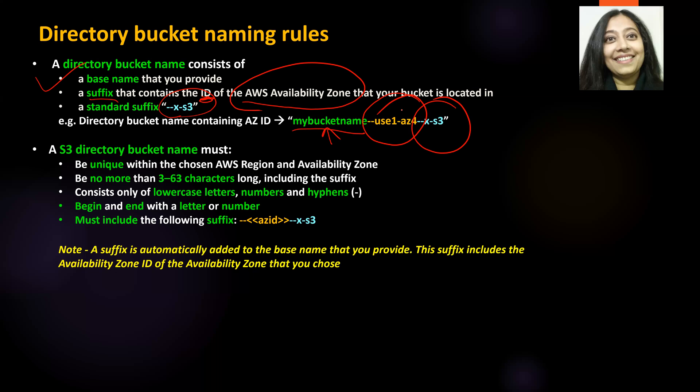The S3 bucket name must be unique, should be between 3 to 63 characters — and that includes the suffix. It can only contain lowercase letters, numbers, and hyphens, and it must begin and end with a letter or a number. It must also include the AZ ID suffix and the '--x-s3' suffix, but don't worry — whatever base name you provide, those suffixes will be automatically added.